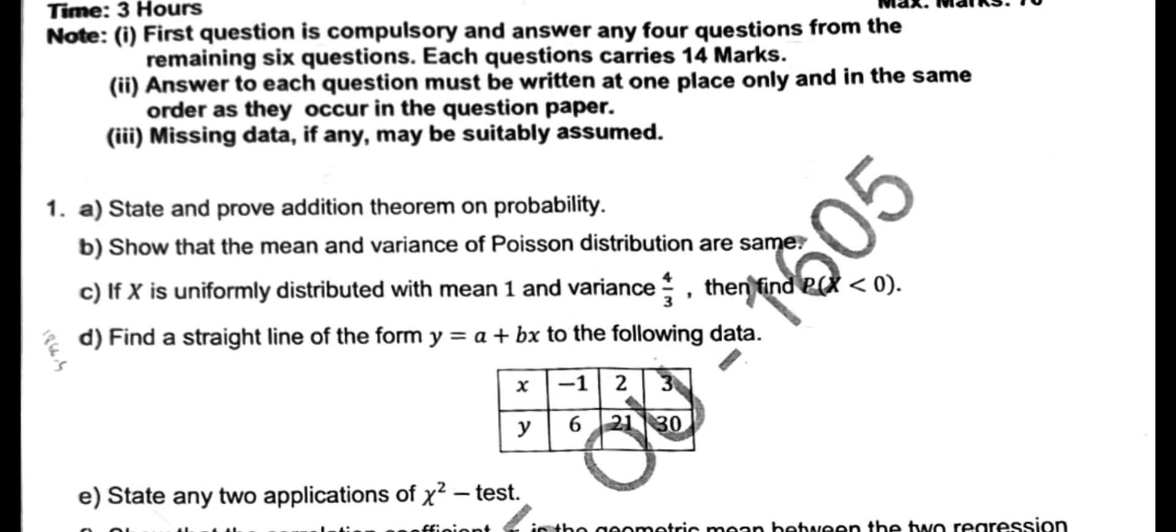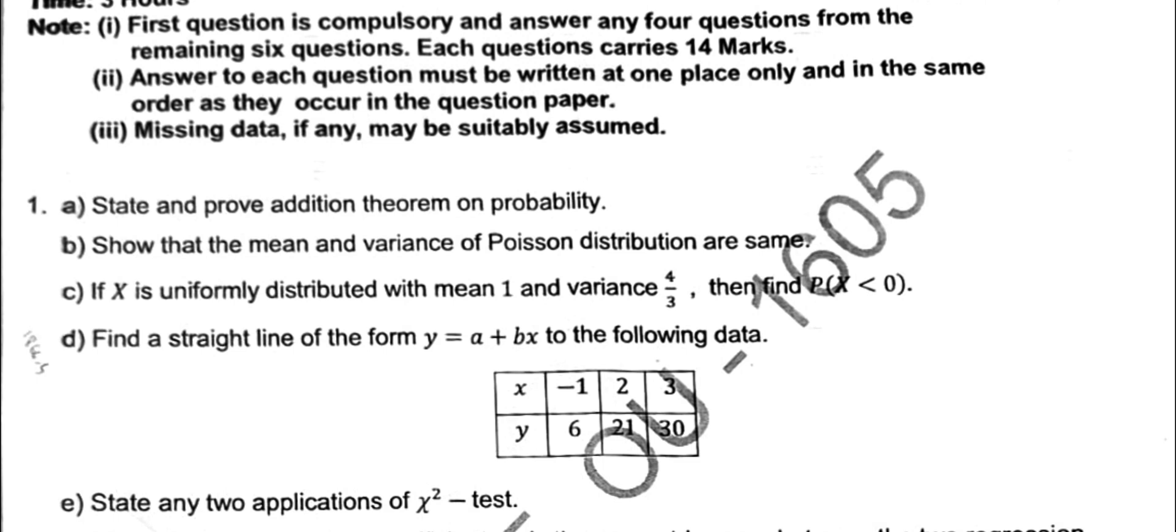State and prove - if you write the statement it is enough for two marks, no need to prove it. Then B is show the mean and variance of Poisson distribution - both are same, mean and variance both are lambda. That we have to find and show. This is also a very lengthy question. Then C, if X is uniformly distributed with mean 1 and variance, uniform distribution problem he gave.